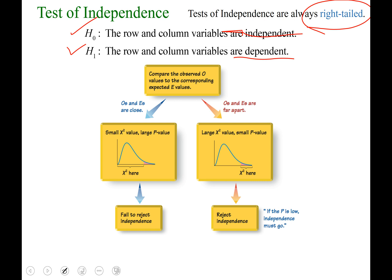Flowchart to walk you through the thought process. If your O's and E's are close together, so basically what you observed and what you expected to observe are close, then you have a small chi-squared, a large p-value, and you would fail to reject independence.